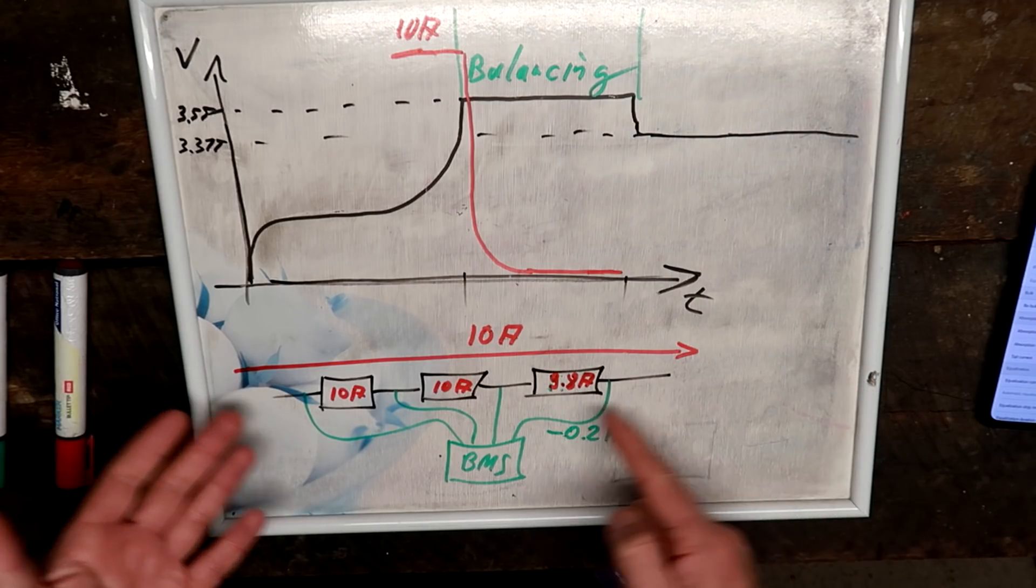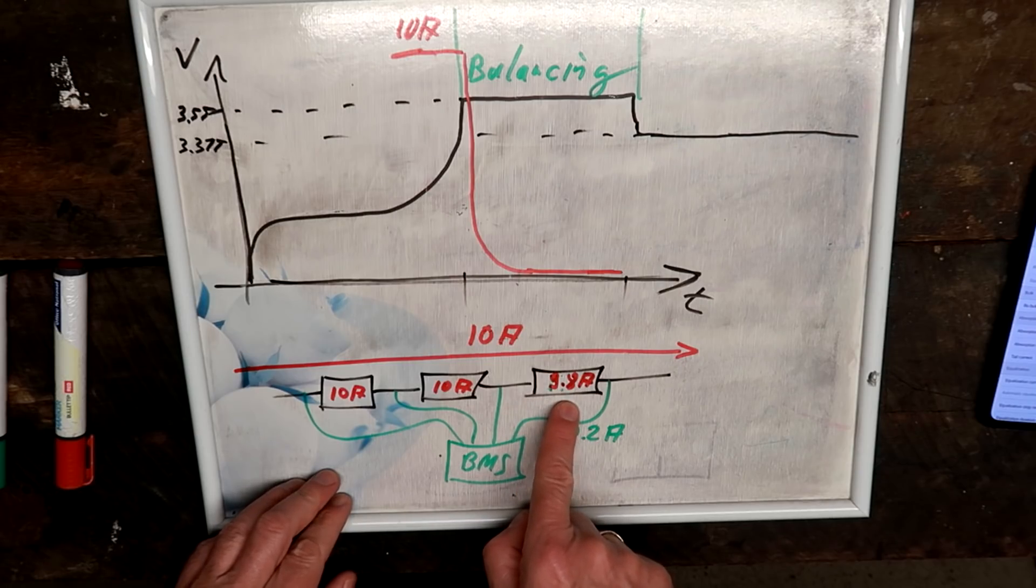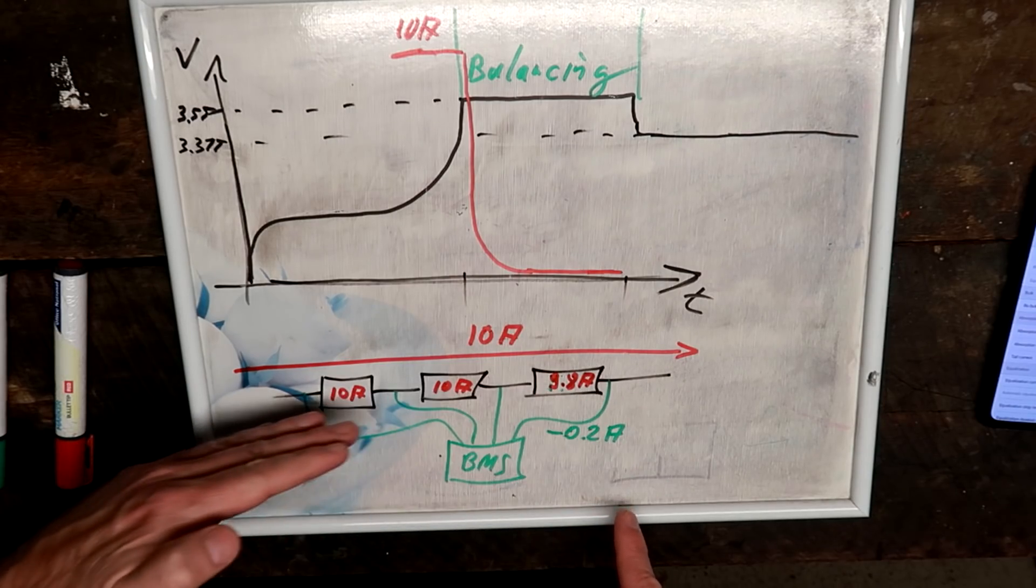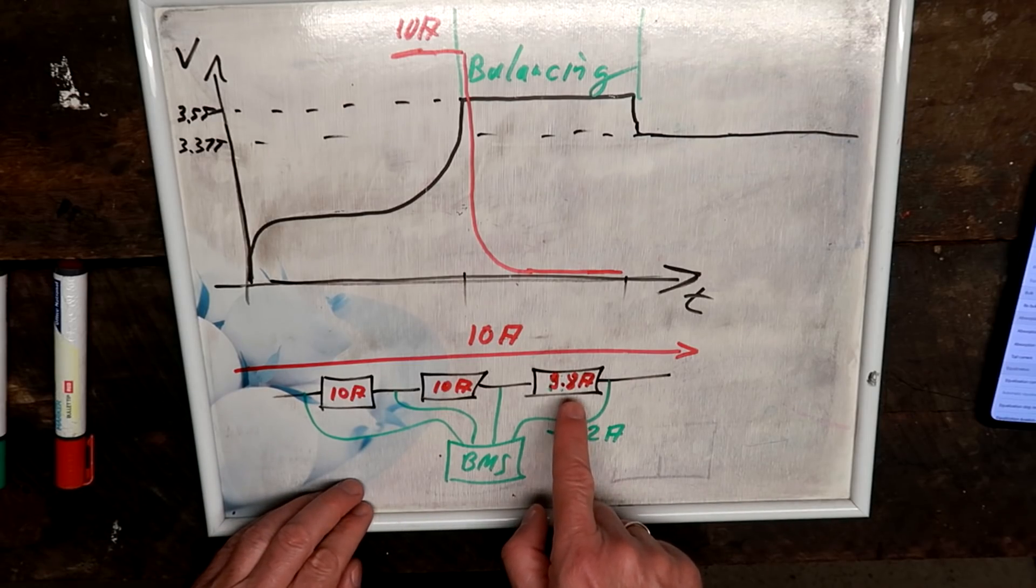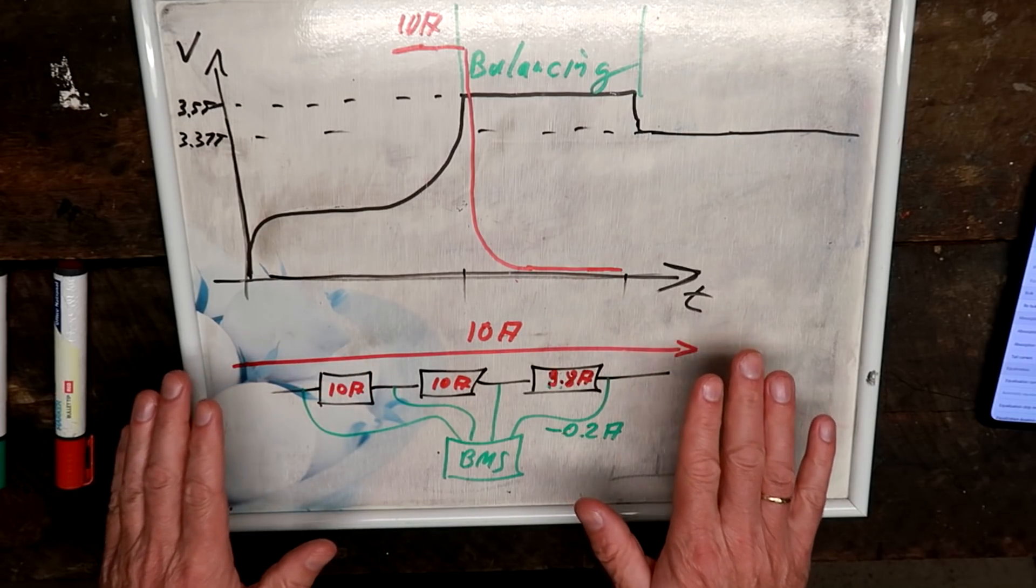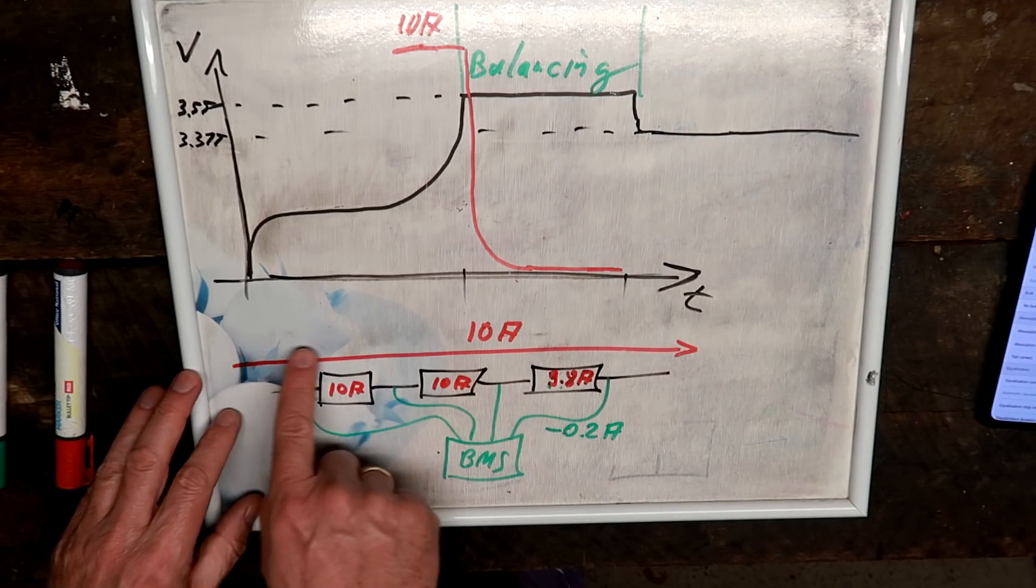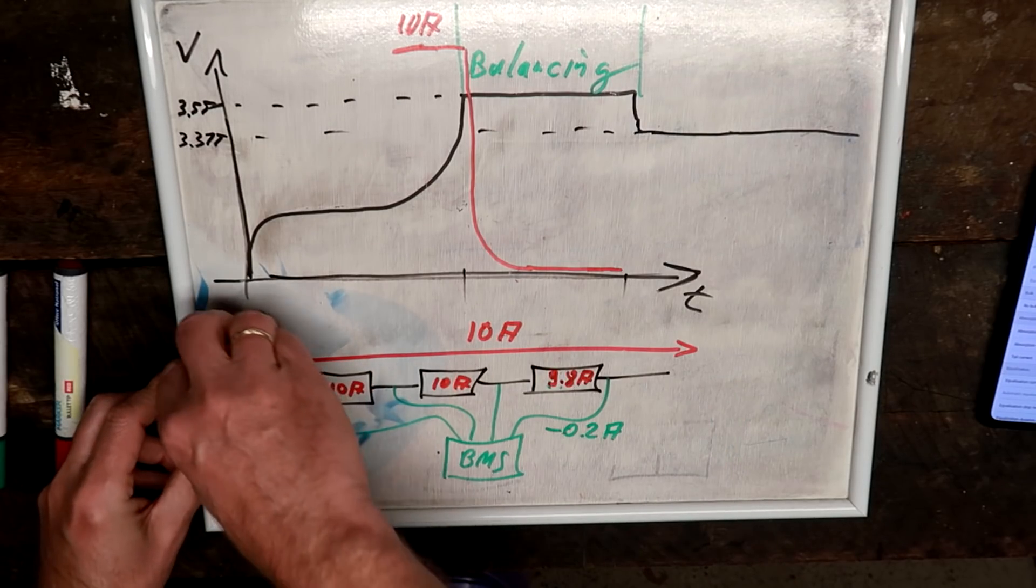No, we don't, because we are still charging with positive 9.8 amps. We are still pushing electrons through the cell, just not as much as to the other ones. This is why balancing does not make sense at all as long as you have charge current going through your battery bank.